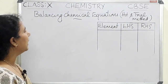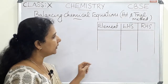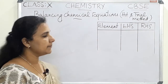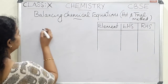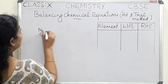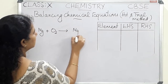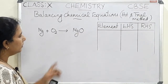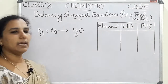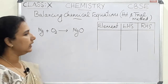Now let's see how to balance a chemical equation using a method known as the hit and trial method. Consider the equation: magnesium plus oxygen gives magnesium oxide. This is an unbalanced equation where the number of atoms on the LHS and RHS are not equal.